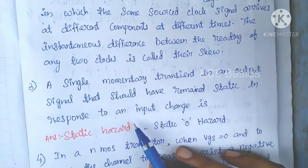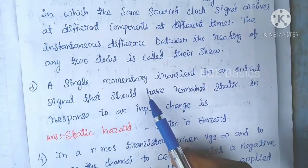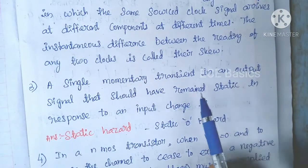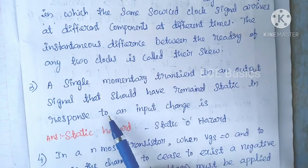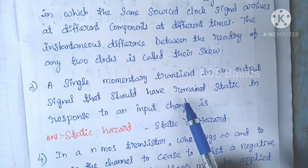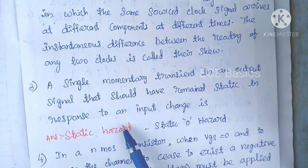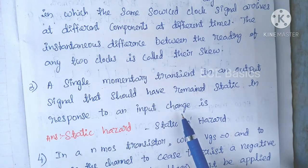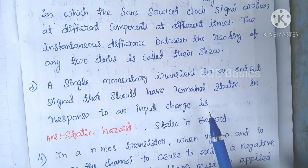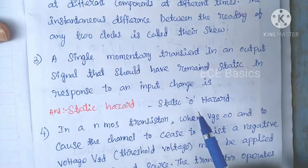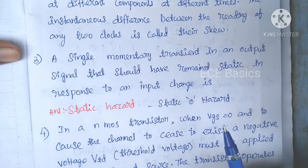Next question: A single momentary transient in an output signal that should have remained static in response to an input change. The answer is static hazard — specifically, it is a static zero hazard.